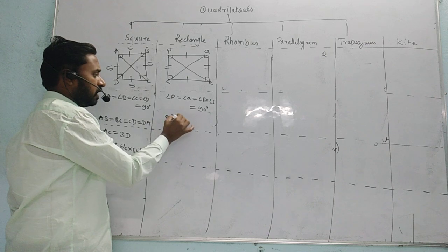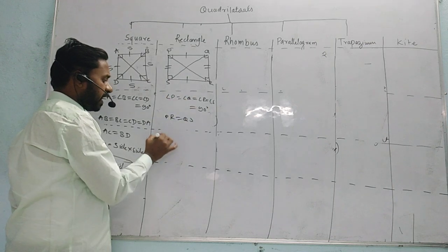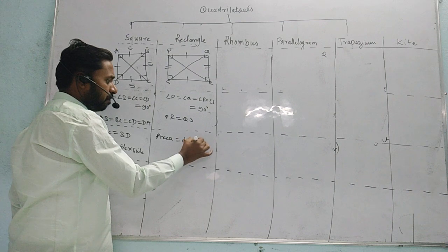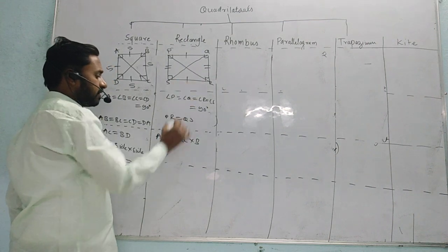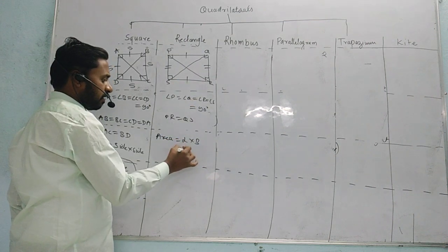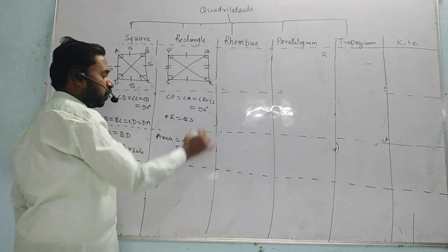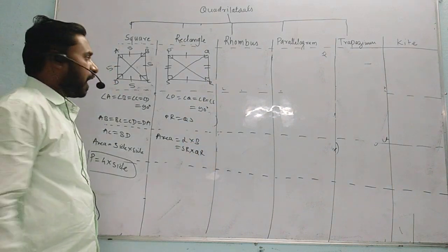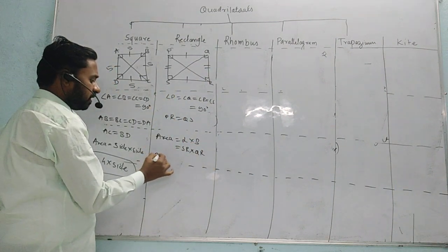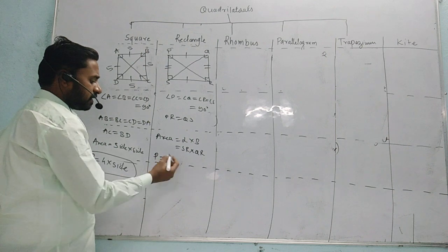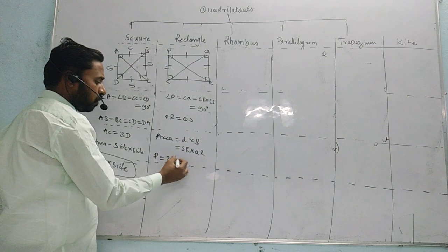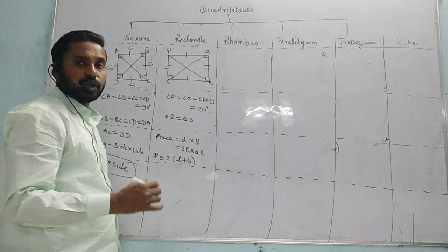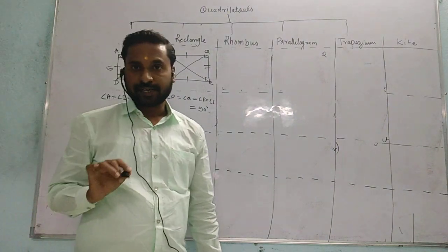Area of a rectangle is length multiplied by breadth, meaning SR multiplied by QR. And the perimeter is 2 into the sum of adjacent sides, that is 2 into length plus breadth.